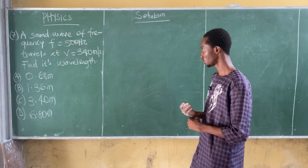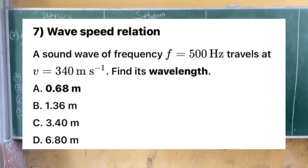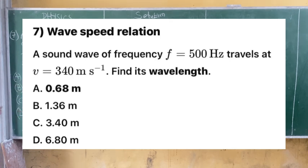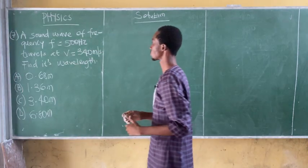Question 7: A sound wave of frequency 500 hertz travels at a velocity of 340 meters per second. Find its wavelength. Option A: 0.68 meters. Option B: 1.36 meters. Option C: 3.40 meters. Option D: 6.80 meters. Let's solve this question together.